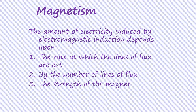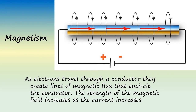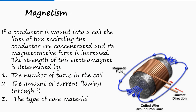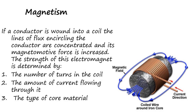The amount of electricity induced by electromagnetic induction depends upon three things: one, the rate at which the lines of magnetic flux are cut; two, by the number of lines of flux; and three, by the strength of the magnet. As electrons travel through a conductor, they create lines of magnetic flux that encircle the conductor. The strength of the magnetic field increases as the current increases. This picture illustrates current flowing through a conducting wire depicted by the red arrows. Though in class we will usually indicate current flowing from negative to positive, this picture uses the conventional flow theory, but it makes no difference for the purposes here. We can see here the lines of magnetic flux encircling the conducting wire. If a conductor is wound into a coil, the lines of flux encircling the conductor are concentrated, and its magnetomotive force is increased.